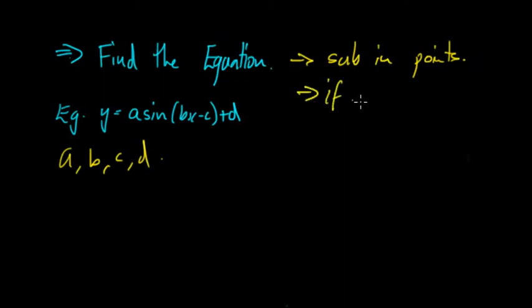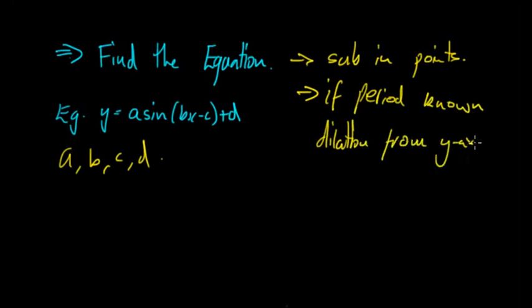If you also know the period then you can work out the dilation from the y axis. So if you know the period is 2π, then you know in this example that b would equal 1 because there hasn't been any dilation. But if you know the period was, let's say π, then you would know that b would have to equal 2, because for the 2x to get that, that would achieve a period of π.